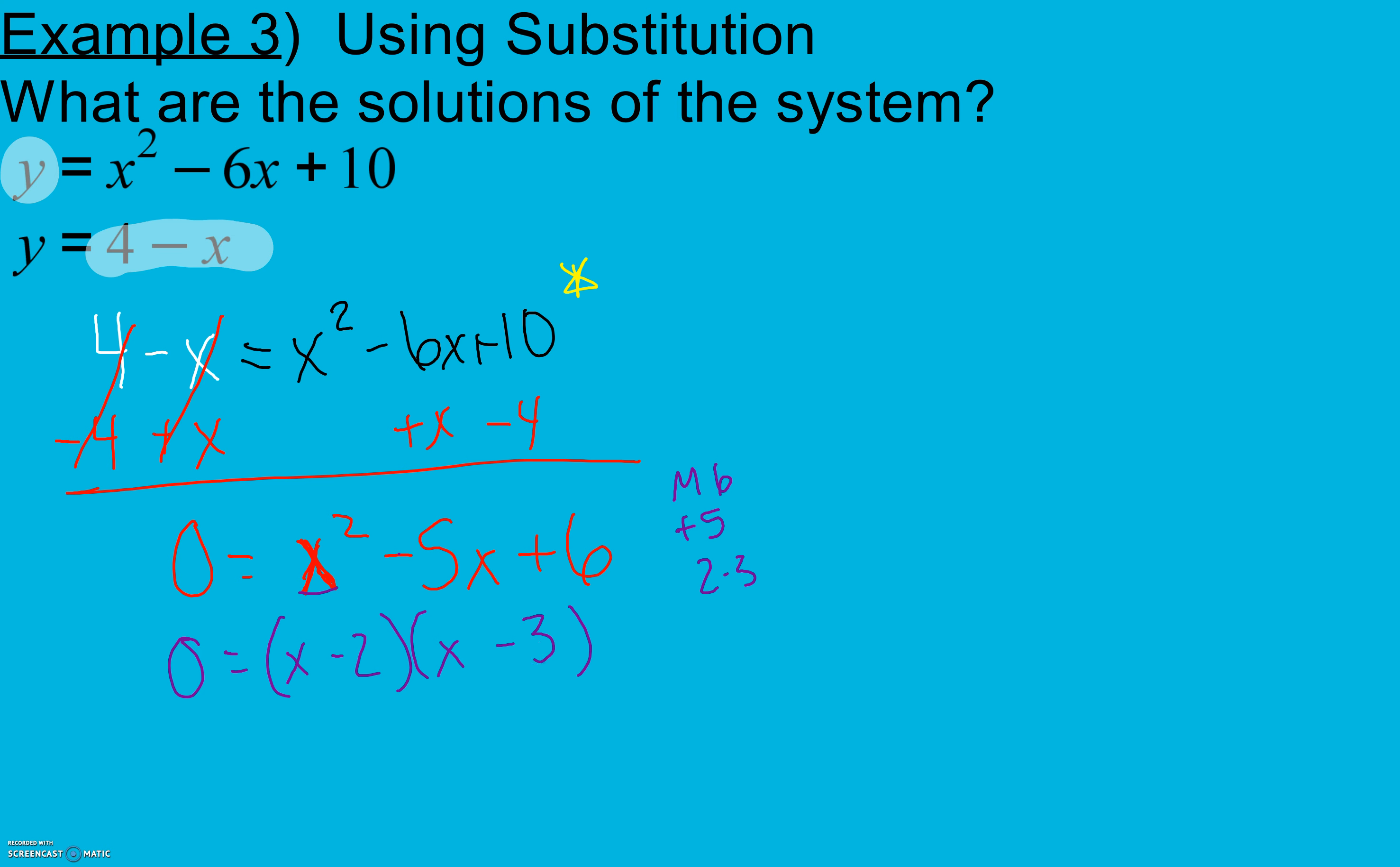Zero product property says the only way that I can multiply to 0 is if one of my factors is 0 or my other factor is 0, or if my factors are the same, then both. So here I'm going to add 2 to get x equals 2, and add 3 to get x equals 3.